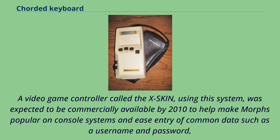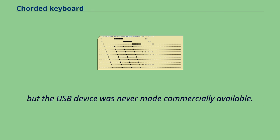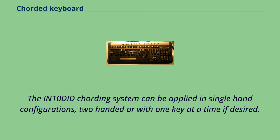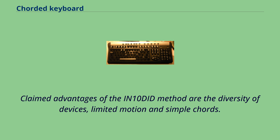A video game controller called the X-Skin using this system was expected to be commercially available by 2010, but the USB device was never made commercially available. The IN10-DID cording system can be applied in single-hand configurations, two-handed, or with one key at a time if desired. Claimed advantages of the IN10-DID method are the diversity of devices, limited motion, and simple chords.